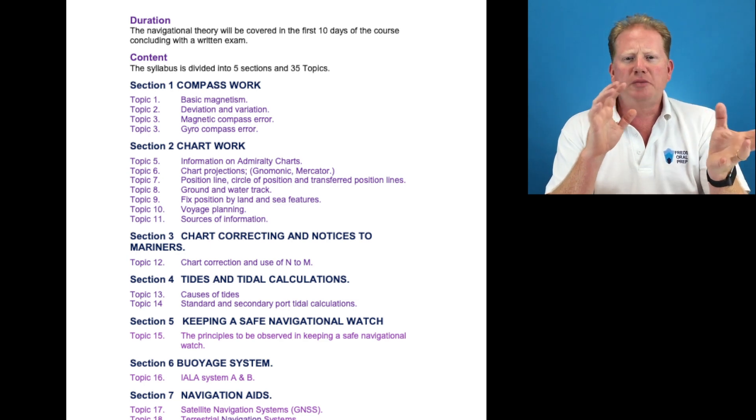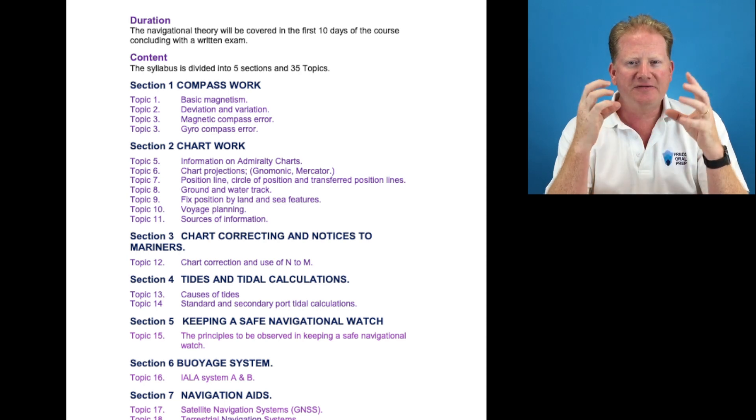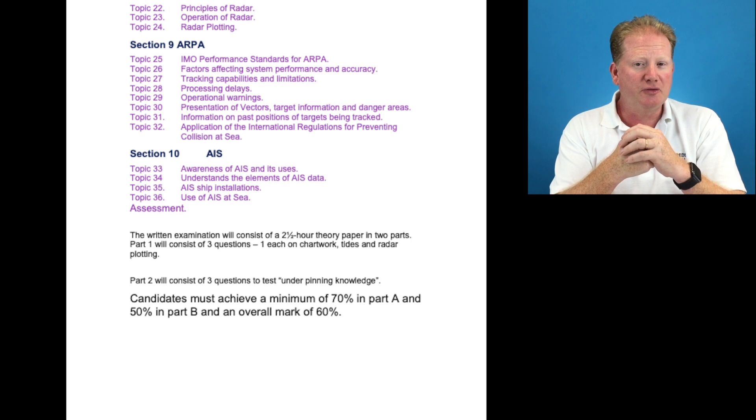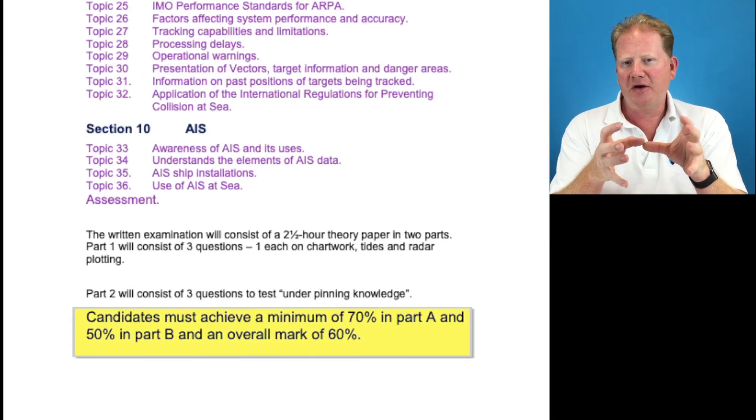The NAVN radar is split into two parts. Part A is chart work, radar plotting, and tide. That is a very important part of the exam - 70% of the total mark. You cannot afford to make a mistake on Part A.